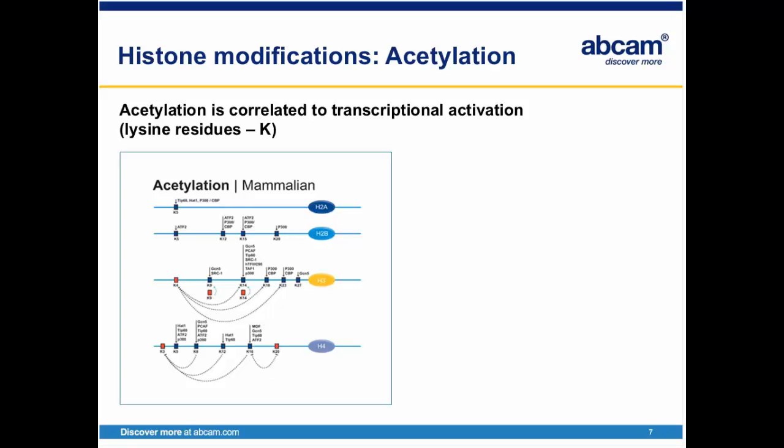Acetylation was one of the first histone modifications described and linked to transcriptional regulation. Acetylation on lysine residues leads to a relaxation of the chromatin structure, allows the binding of transcription factors, and significantly increases gene expression. The enzymes responsible for regulating the acetylation of histone tails are histone acetyltransferases and deacetylases. While all histones can be acetylated, lysine residues within H3 and H4 are preferential targets for HAT complexes. Histone acetylation is largely targeted to promoter regions, known as promoter-localized acetylation.